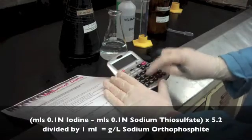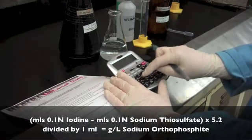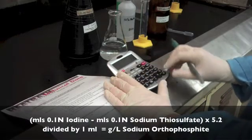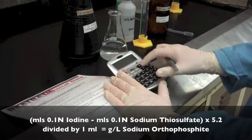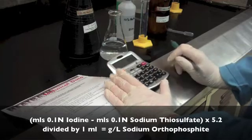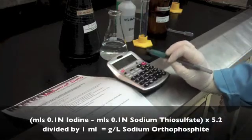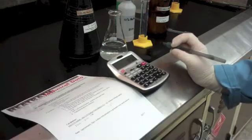So 50 milliliters minus our 12.1 milliliters of sodium thiosulfate times 5.2, divided by our 1 milliliter sample, gives us 197 grams per liter of sodium orthophosphate.